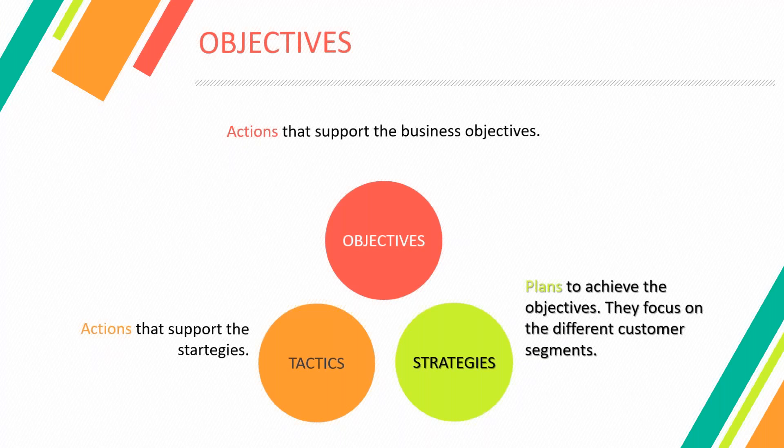We have to think strategies and tactics for each market — it's not a single strategy and tactics for everything. For example, maybe from the 100 women I want to sell the splash to, maybe 50 of them like to buy from Amazon online, so I will have to think an online strategy for them. But maybe the other 50% like to buy in real stores, so I will have to develop a strategy so they can find the product in the store. It has to be different strategies.